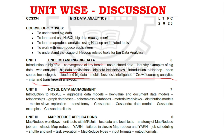Unit 2 covers NoSQL - aggregate data models are very very important questions. Similarly, in Cassandra, the data model and client concepts are key areas. Master-slave replication is also a lot of key areas. Unit 3 covers MapReduce workflows and YARN - both MapReduce and YARN concepts are key areas. Failures in classic MapReduce and YARN are also very important.